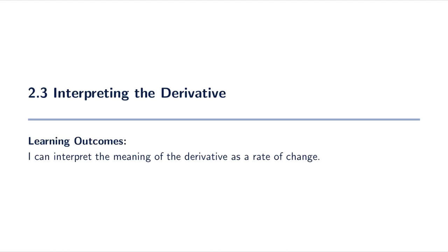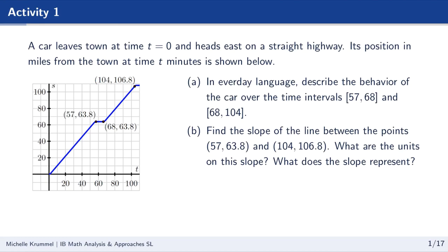Hello, I'm Michelle Cromwell, and in this lesson we are looking at how to interpret the derivative as a rate of change. For our introductory problem, we are given a graph and a description. A car leaves town at time t equals zero and heads east on a straight highway. Its position in miles from the town at time t minutes is shown below. In everyday language, we want to describe the behavior of the car over the time intervals 57 to 68 and 68 to 104.